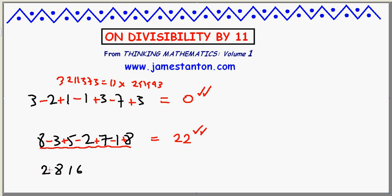A small example, 2816, plus 2, minus 8, plus 1, minus 6. I have plus 3, minus 14, that's negative 11. Yep, negative 11 is certainly a multiple of 11, which means that the original number itself was a multiple of 11.